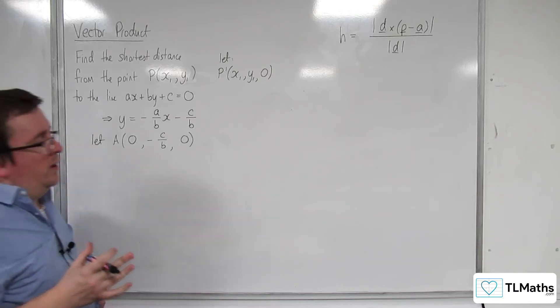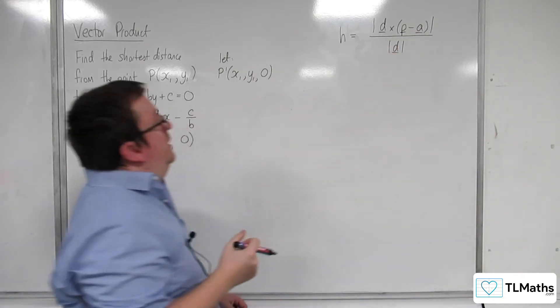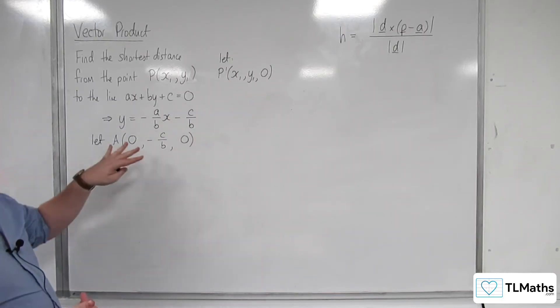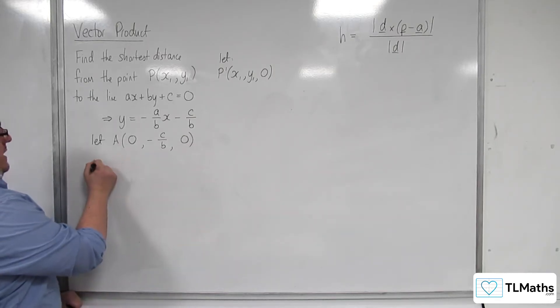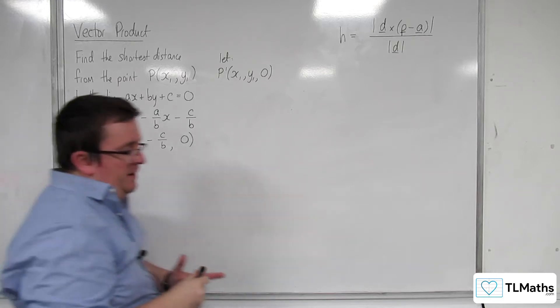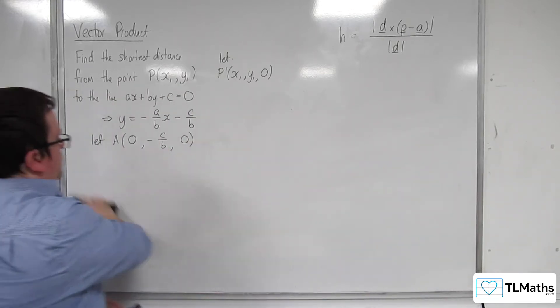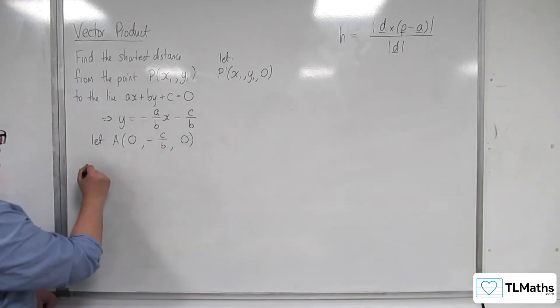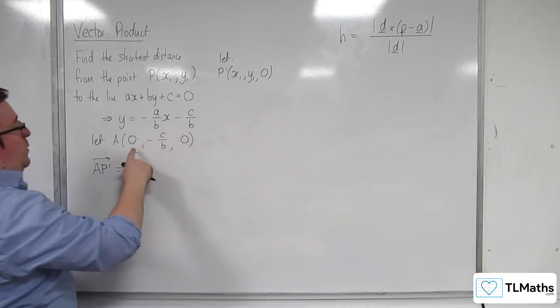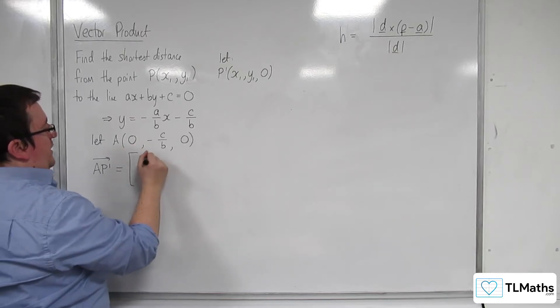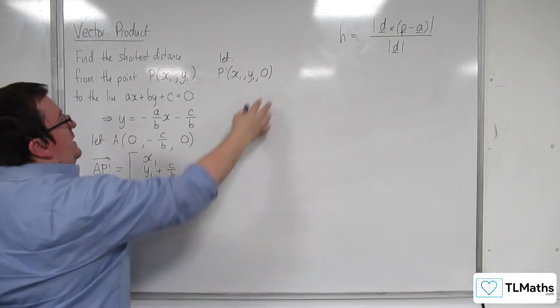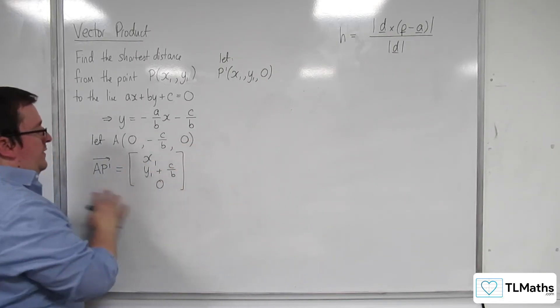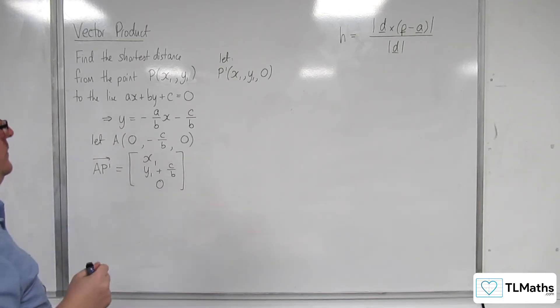So, I can now work out p take away a. So, lowercase p is the position vector of P' and little a is the position vector of capital A. So I can say p to a. Sorry, a to p. I don't want p to a. A to P' prime. Well, that will be P' take away A. So, x1 take away 0 is x1. We've got y1 take away minus c over b, so y1 plus c over b. And then we've got 0 take away 0 is 0. So this is AP' prime.